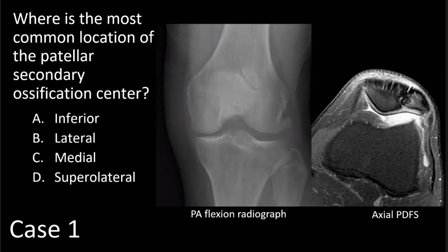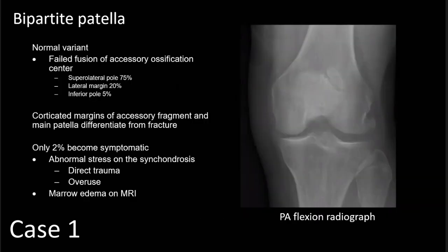There's also only minimal edema within that lateral bone segment. The question in this case is: where is the most common location of the patellar secondary ossification center? Inferior, lateral, medial, or superlateral? The answer is superlateral, which is the location seen in this case. This is a case of bipartite patella, a normal variant characterized by failed fusion of an accessory ossification center, most often at the superlateral pole — 75% in that area — although it can occur along the lateral margin in 20% and more rarely along the inferior pole in 5%. The corticated margins of the accessory fragment and the main patella help differentiate this entity from fracture.